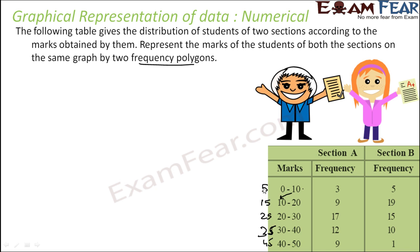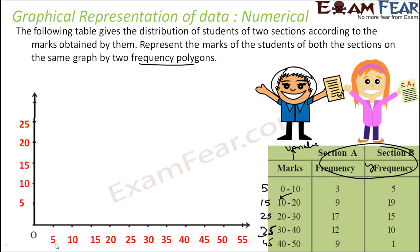Now we will plot the points. The midpoints are the variable, so they go on the x-axis, and the frequencies are the values on the y-axis. On x we have points from 5 to 55 — I took the midpoint of the next class as well. The maximum frequency value I see is 19, so I have taken that range. Let's plot these points.